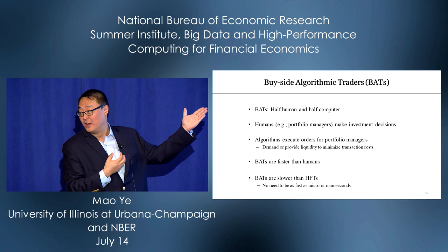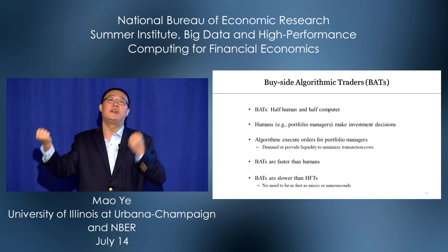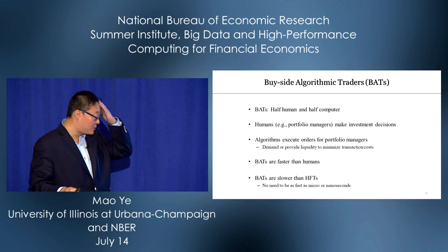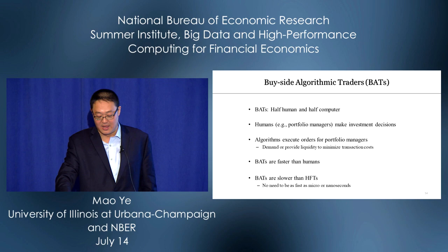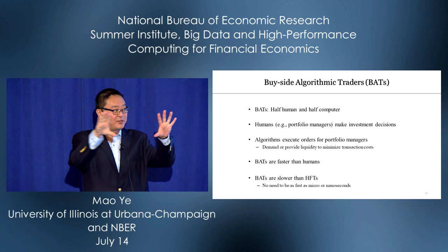The algorithm's decision is whether to demand or supply liquidity, with the purpose of minimizing transaction costs. These traders — BATS — are faster than humans but slower than HFTs. Why? Because they don't need to be as fast. HFTs need to consistently monitor the market to find any opportunity; BATS just need to execute existing orders.